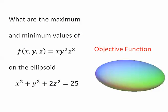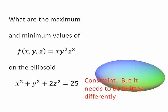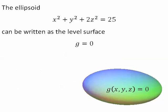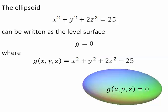Our objective function is f. Our constraint is the ellipsoid, but to use the method of Lagrange multipliers, we need to rewrite this constraint. We're going to write the ellipsoid as the level surface g equals 0, where g equals x squared plus y squared plus 2z squared minus 25.